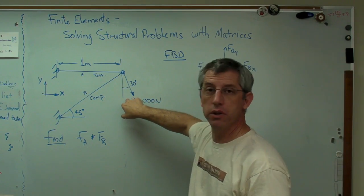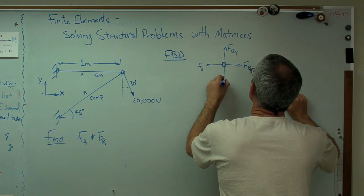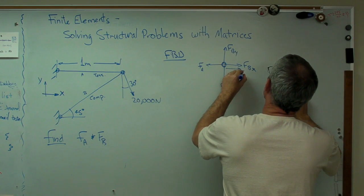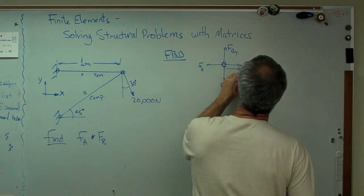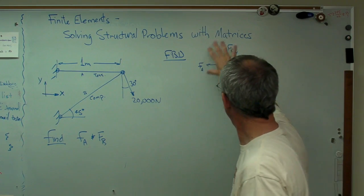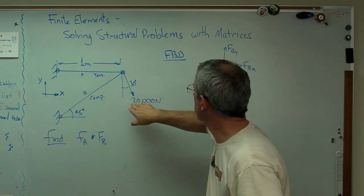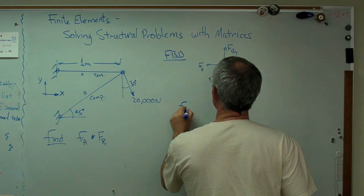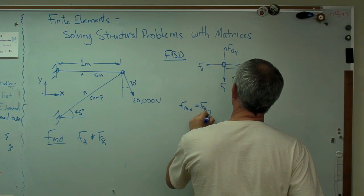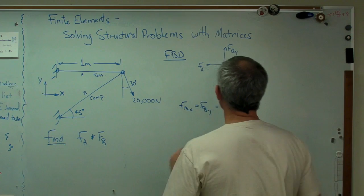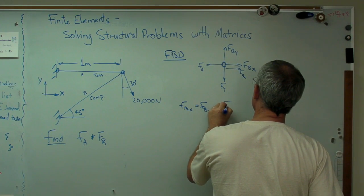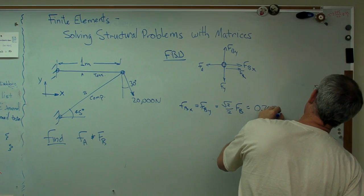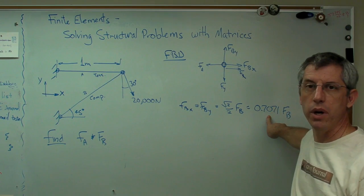Now I've got two components of force here. Let's call this one, that's going to be force in the Y direction. And I've also got a component in the X direction. So I'll put that here. FBX equals FBY. And since that's 45 degrees, if you do the trig, you'll find out this is the square root of 2 over 2 FB. And that's 0.7071 FB. So I'm going to use that number in here.